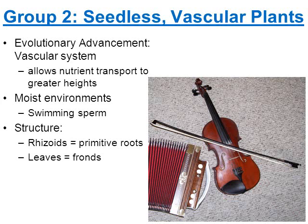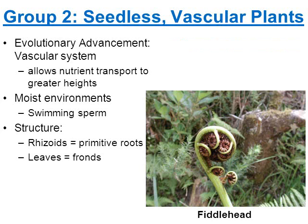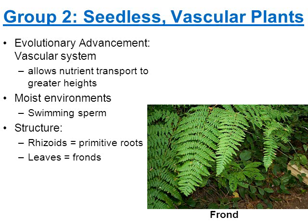Here's a picture of a fiddle. The reason I have it here is because the head of the fiddle is a curved and curled piece of wood — and this right here is a fiddle head. That's kind of how it gets its name: this is the frond curled up. When fern fronds are curled up, we call it a fiddlehead. Here are some fiddleheads that are uncurling and growing into the leaves of a fern, which we call a frond.